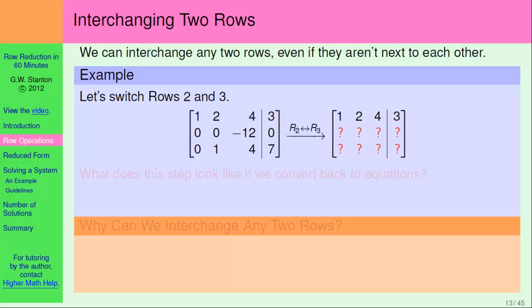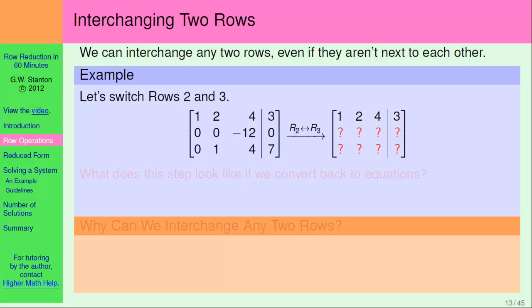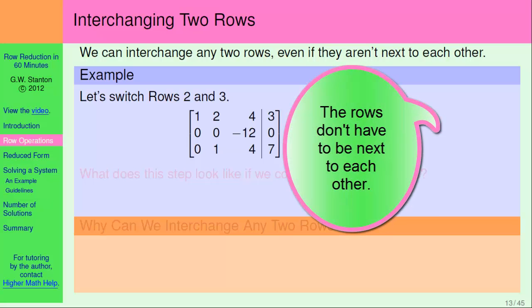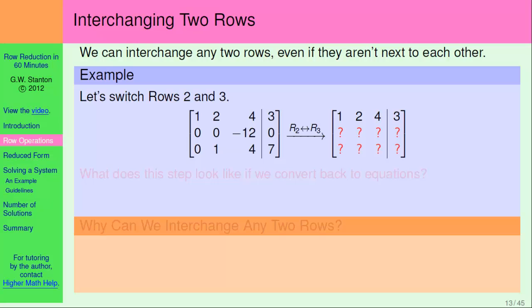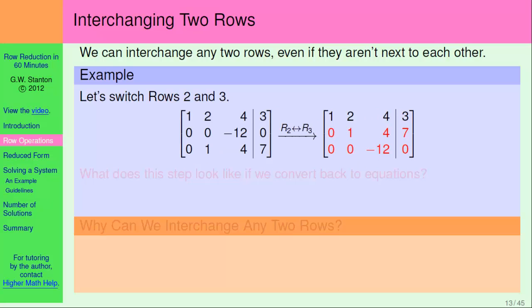Okay. Next row operation. And this one is pretty simple. So, you can pick any two rows, they don't have to be next to each other, and you can just switch them. So, in this case, we have, we just decided to switch row two and row three. We can always record what we're doing with a little bit of notation here. So, let's see what that gives us. Just what you'd expect. The two rows swap.